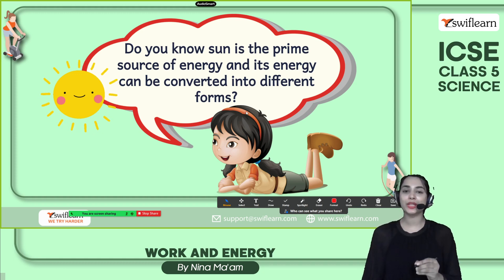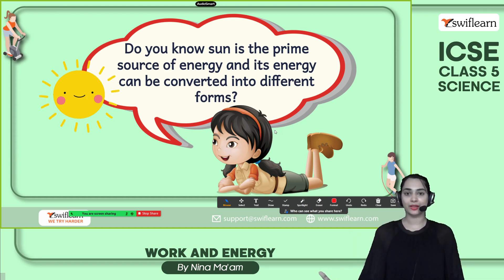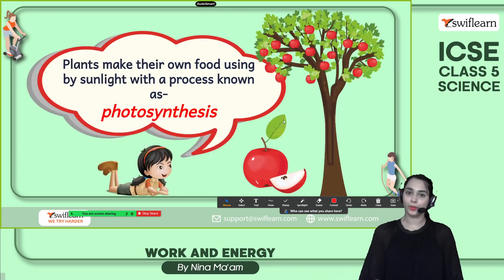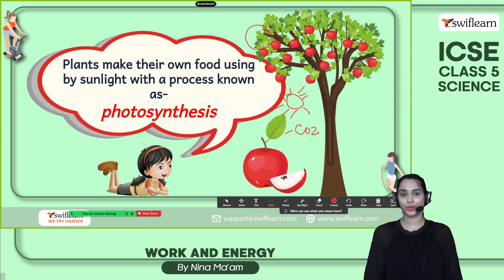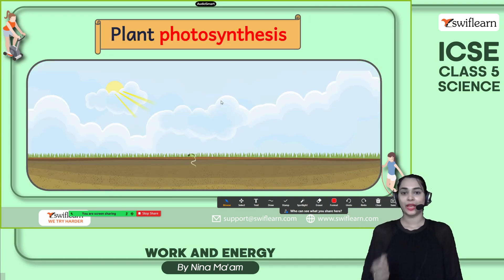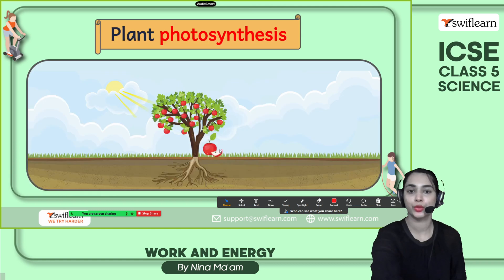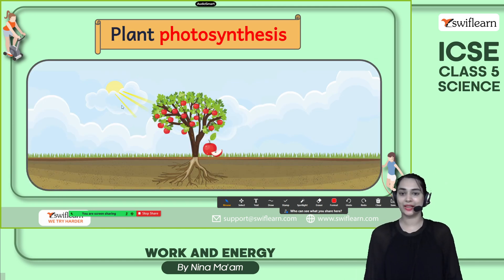The sun is the primary source of energy — it is a great natural source. We can convert solar energy into different forms. One of the greatest uses of solar energy is photosynthesis. The leaves are known as the food factory of the plant. The leaves collect sunlight, water, nutrients, and carbon dioxide to perform photosynthesis — the preparation of food and energy for the plant.